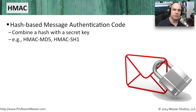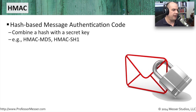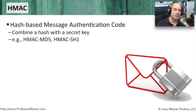When you apply a hash algorithm to a file, document, or email, you get a signature, but you can't verify who sent it. The Hash-Based Message Authentication Code, or HMAC, solves this by combining a secret key with the hashing process so that on the other side, you can apply the same key and verify the sender — because only the two of you know that key.